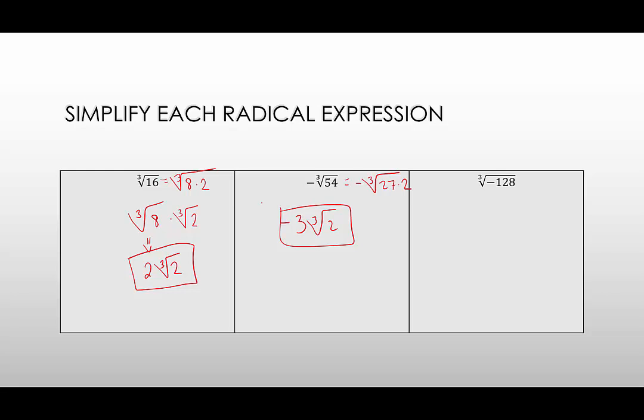In the next example, the largest perfect cube factor of 128 is 64. So we could rewrite this as the cubed root of negative 64 times 2. Keep in mind this is a cubed root, so the fact that there is a negative under the radical is okay. We will still have a real number expression in the end. The cubed root of negative 64 is negative 4, and the cubed root of 2 we leave as the cubed root of 2.